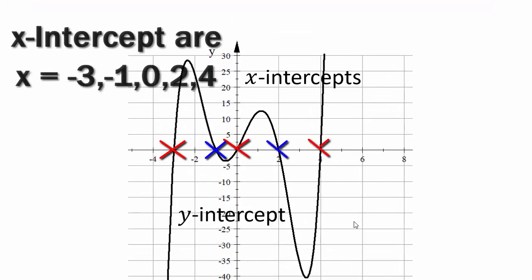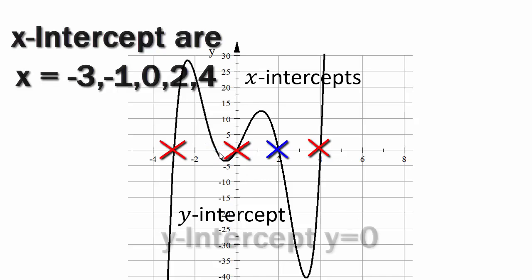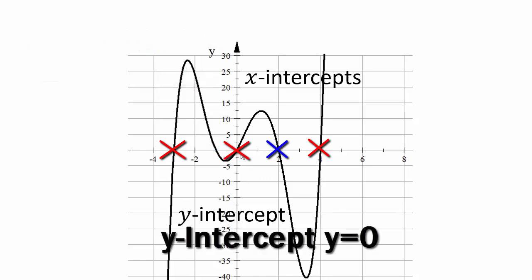So in this case, x equals negative 3, negative 1, 0, 2, and 4 are the x-intercepts. And the y-intercept is 0, because that's the only place the graph hits the y-axis.